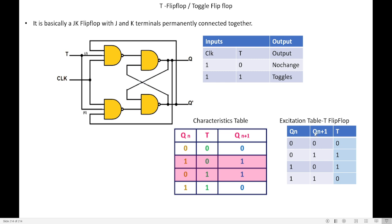When present state Q(n) is 0 and next state Q(n+1) is 0, T equals 0 — no toggle needed. When Q(n) is 0 and Q(n+1) is 1, T equals 1 — toggling required. When Q(n) is 1 and Q(n+1) is 0, T equals 1 — toggling required. When Q(n) is 1 and Q(n+1) is 1, T equals 0 — no change. So the T column reads 0, 1, 1, 0 — a palindrome. This is how we construct the T flip-flop excitation table.